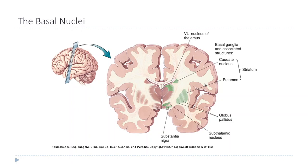The basal nuclei are located in the basal forebrain, which is part of the telencephalon. When the brain develops from the neural tube, the forebrain develops into the telencephalon and the diencephalon. Most of the telencephalon becomes cerebral cortex, but the part that doesn't is called the basal telencephalon, which eventually develops partly into the set of structures we call the basal nuclei.